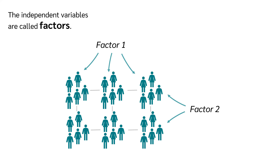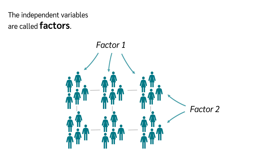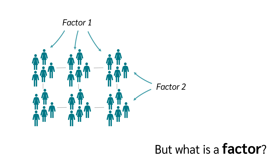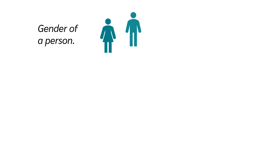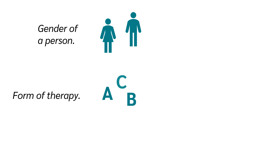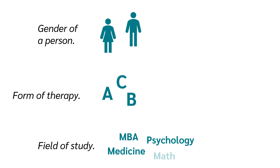The independent variables are called factors. A factor is, for example, gender of a person with the levels male and female, type of therapy with therapy A, B and C, or the field of study with medicine, business administration, psychology and mathematics.